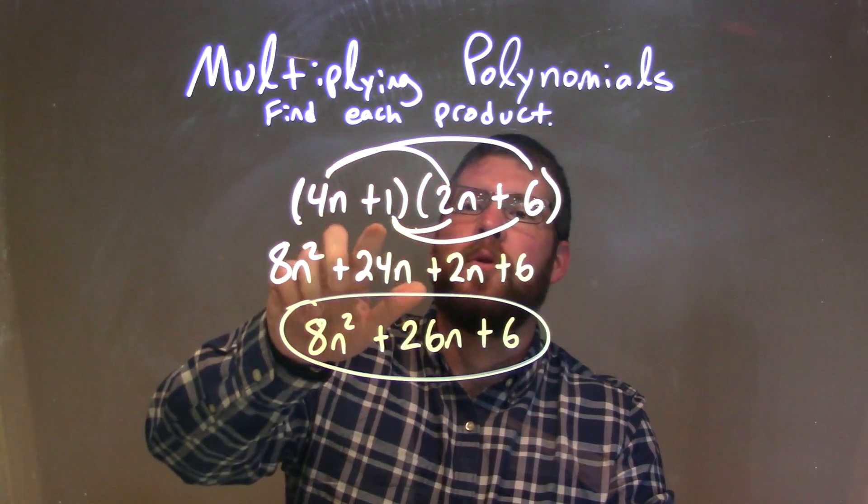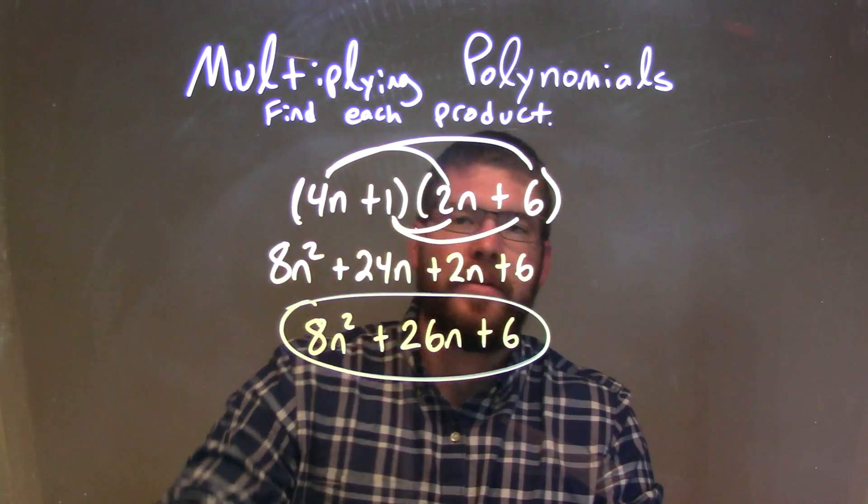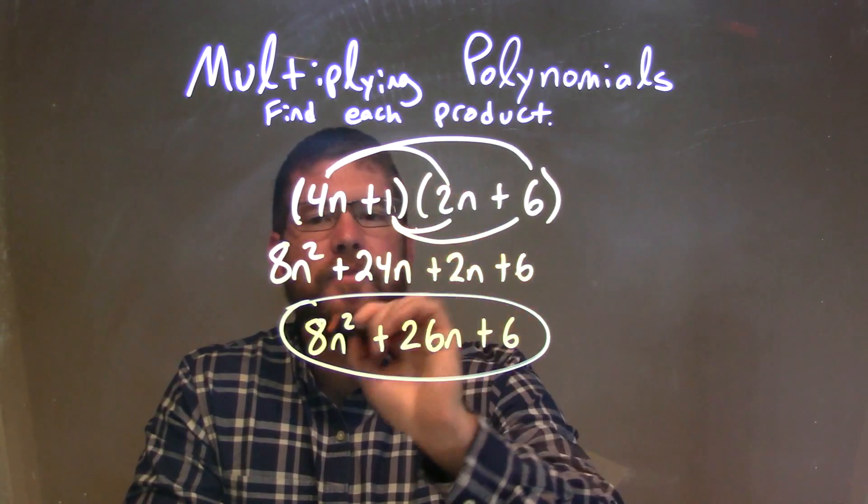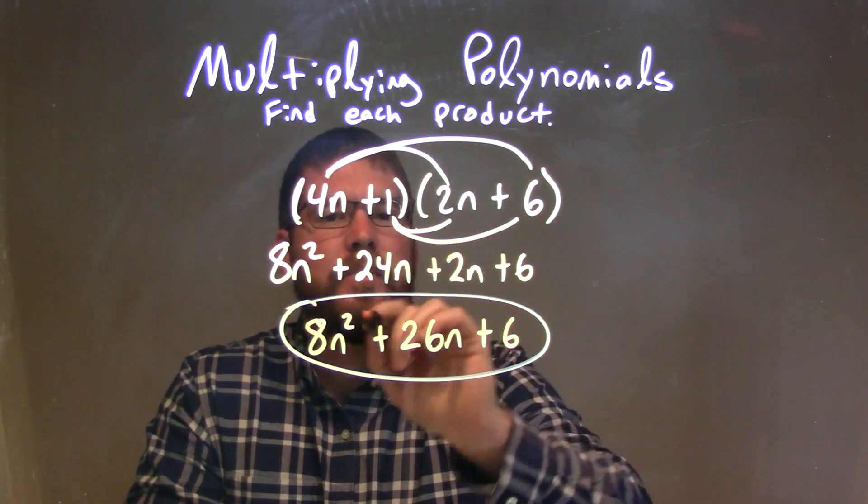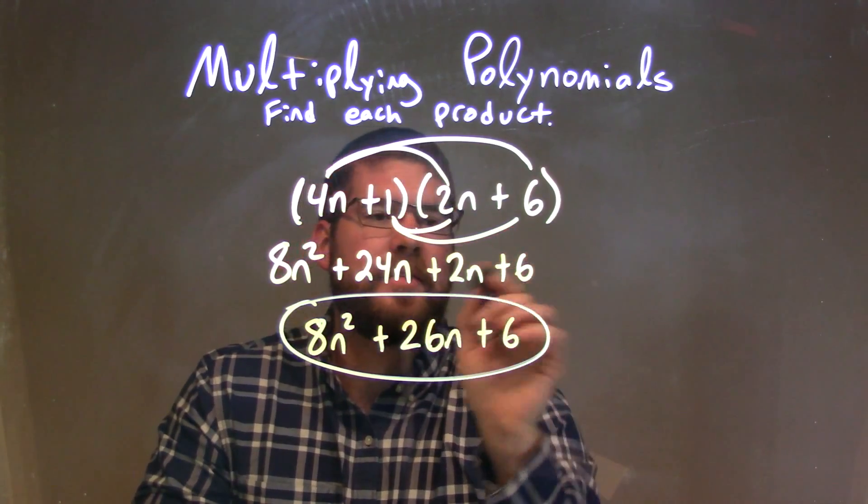So let's recap. We're given 4n plus 1 times 2n plus 6. All parts of my first parentheses need to be multiplied by all parts of my second parentheses. So 4n times 2n was 8n squared, 4n times 6 is 24n, 1 times 2n is 2n, and 1 times 6 is 6.